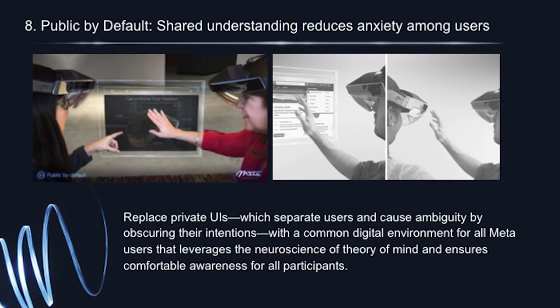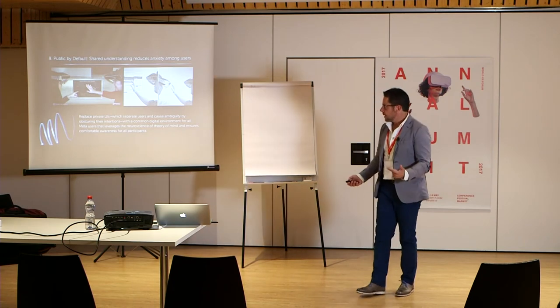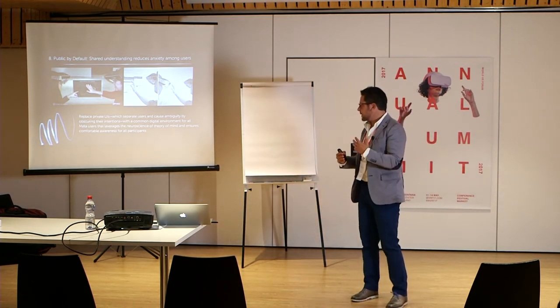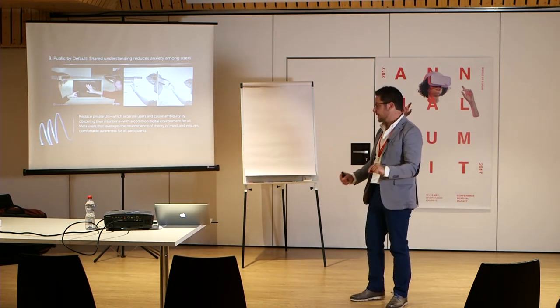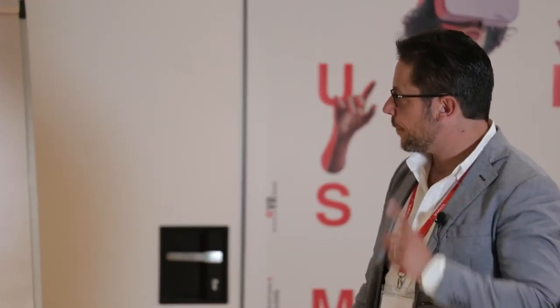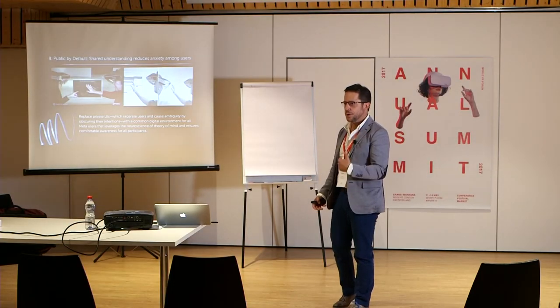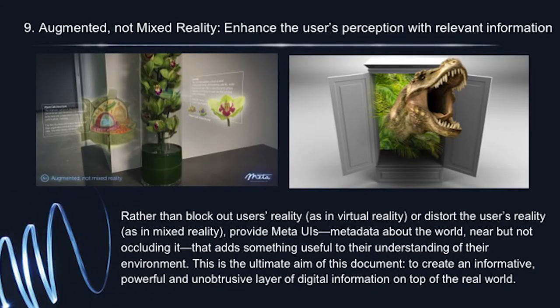Principles eight and nine are very interesting. Principle eight: Public by Default — shared understanding reduces anxiety among users. One effect is the Google Glass issue, where people worried someone was accessing their information. We advocate replacing private UIs, which separate users and cause ambiguity by obscuring intentions, with a common digital environment for all Meta users. This leverages the neuroscience of theory of mind and ensures comfortable awareness among participants — reducing social anxiety by making clear what others around us are doing with their spatial interface.